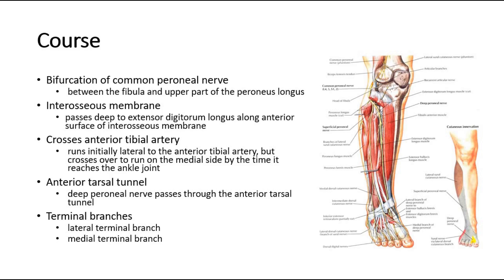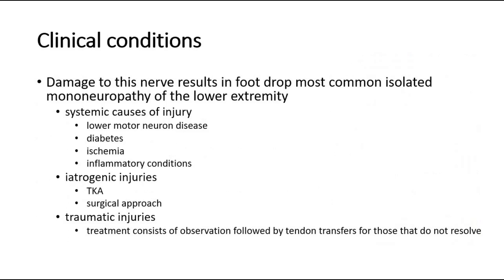It runs initially lateral to the anterior tibial artery, but crosses over to run on the medial side by the time it reaches the ankle joint. Then the deep perineal nerve passes through the anterior tarsal tunnel and terminates into the lateral terminal branch and medial terminal branch.